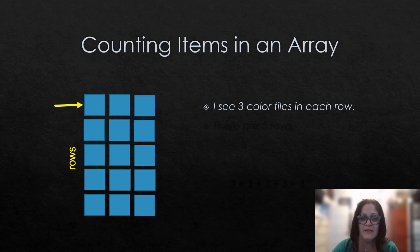Here we see three colored tiles in each row and there are five rows. We will see on the next slide a representation of columns.